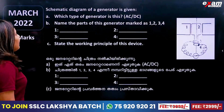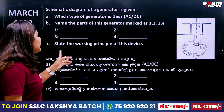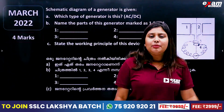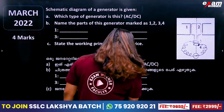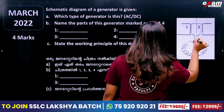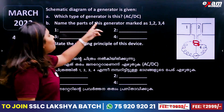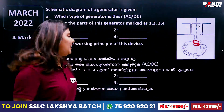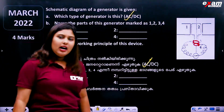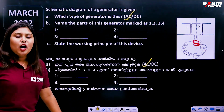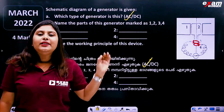A schematic diagram of a generator is given. You can see this is an AC generator. What is an AC generator? It has full rings — that is, slip rings. Which type of generator is this? It is an AC generator. Now, name the parts of the generator marked as 1, 2, 3, 4.